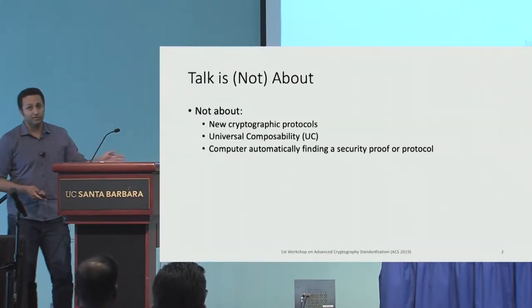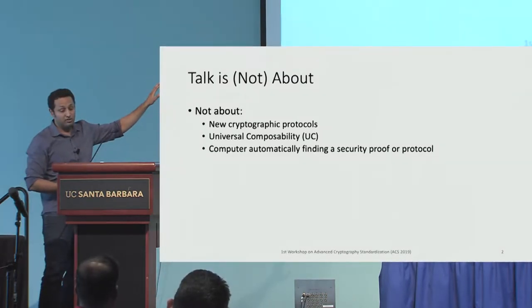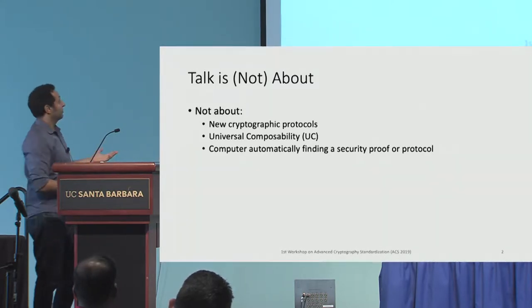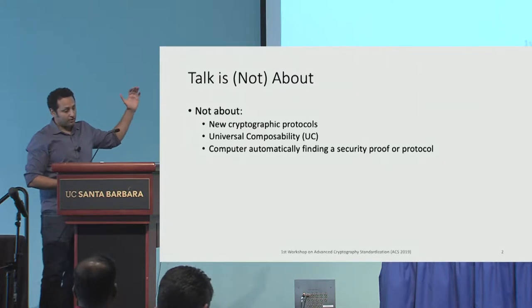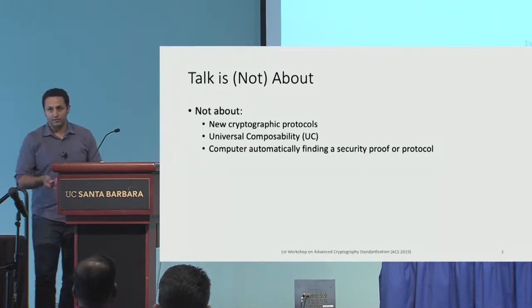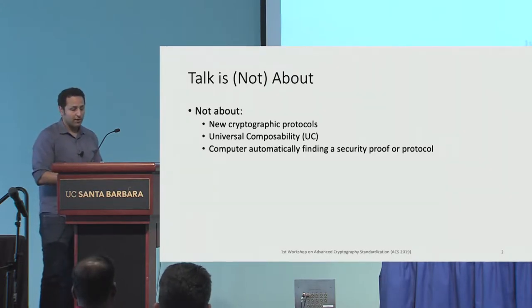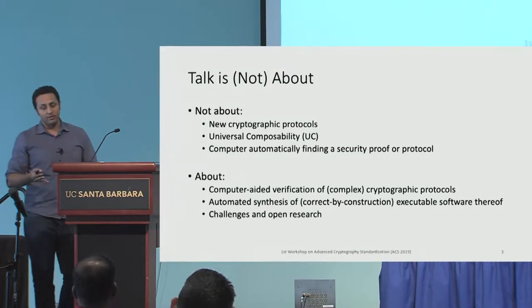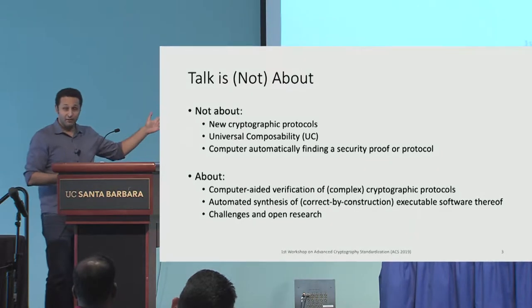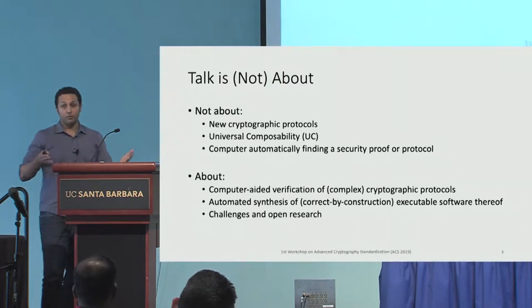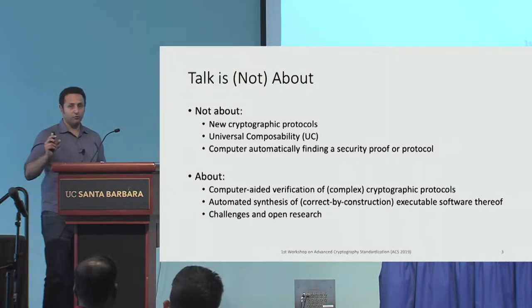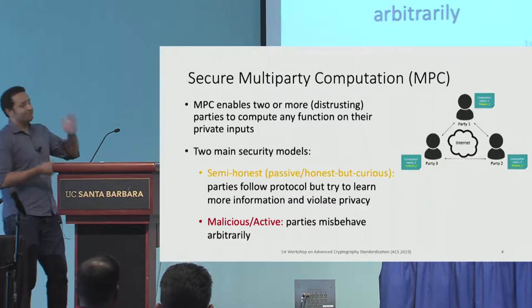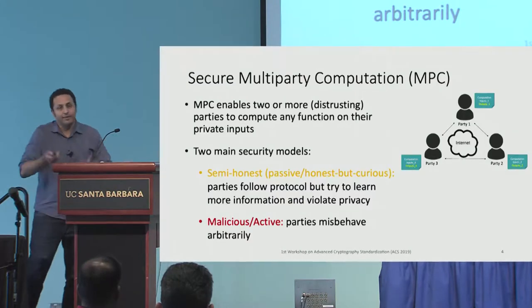What this talk is NOT about: there are no new protocols, no hardness assumptions, and I'm not talking about UC. We're doing game-based verification and modeling. I'm also not talking about having the computer find the protocol or a proof for you. This is basically: if you have a specific protocol and a proof for it and you want to get high confidence in it — and also, if you've been through the trouble of verifying it in a formal model like a theorem prover, you do a little bit of work and you get an executable out of it that is correctly constructed.